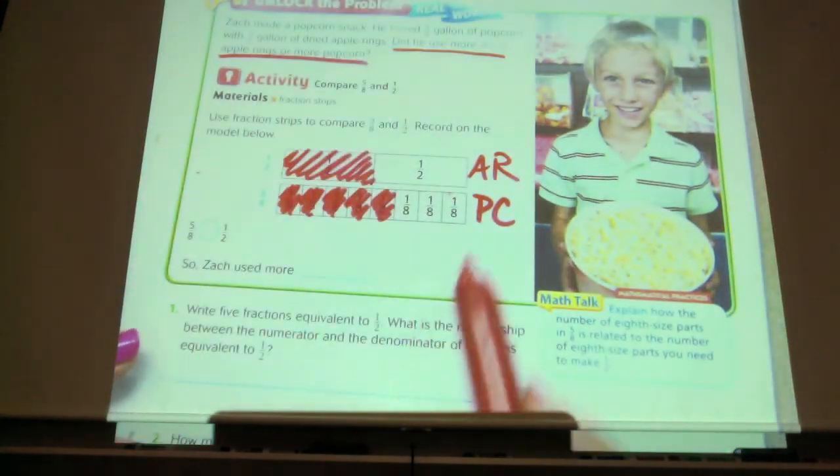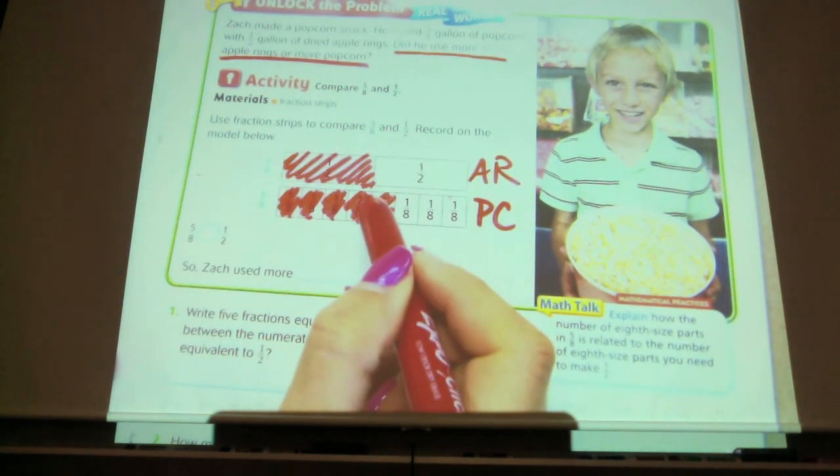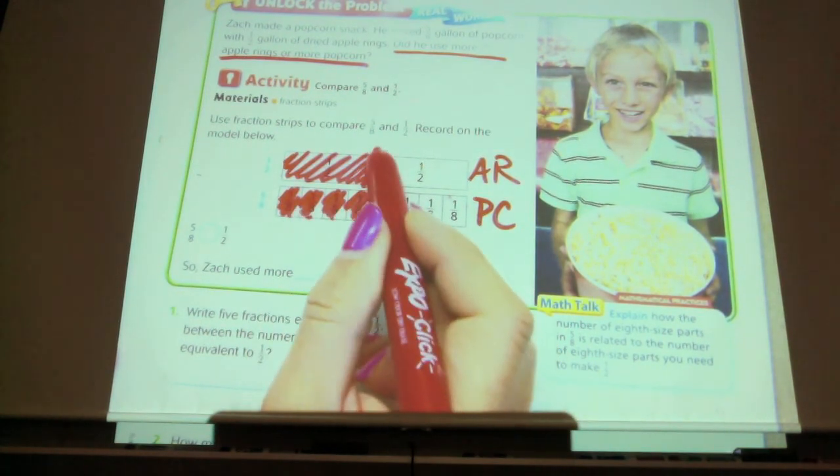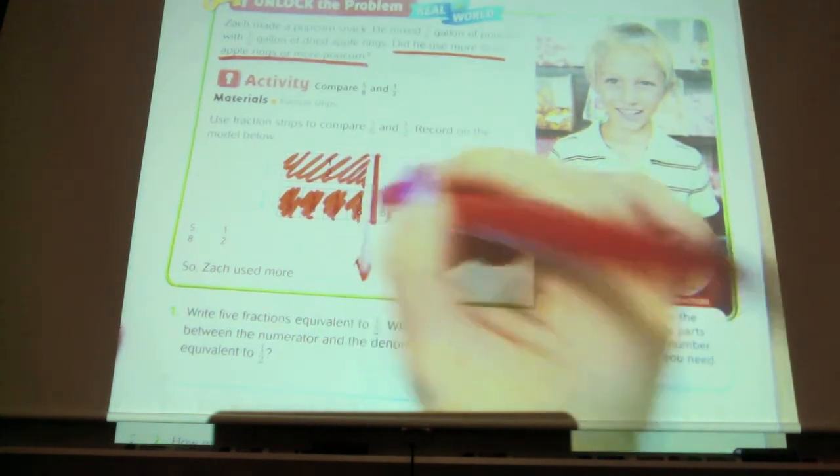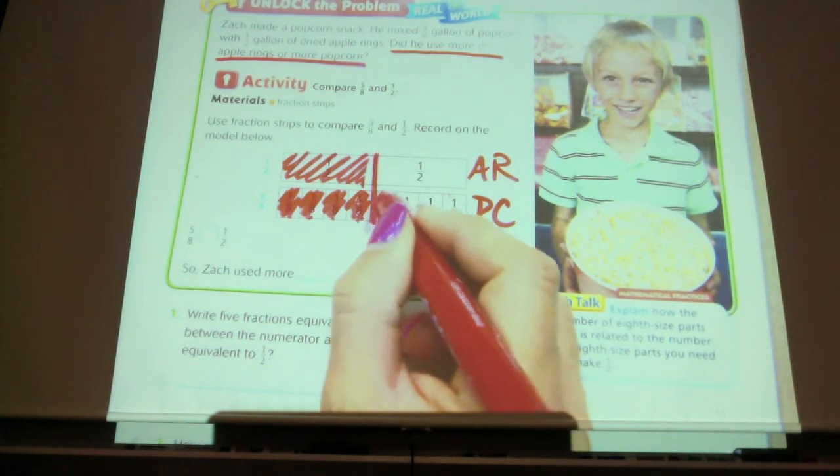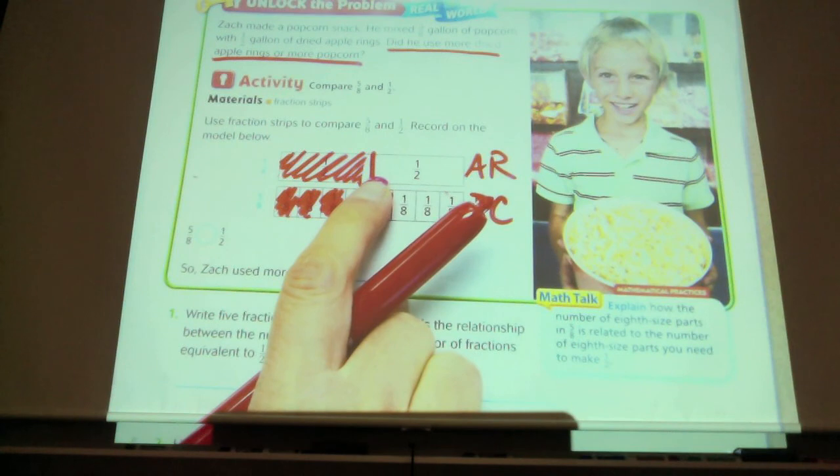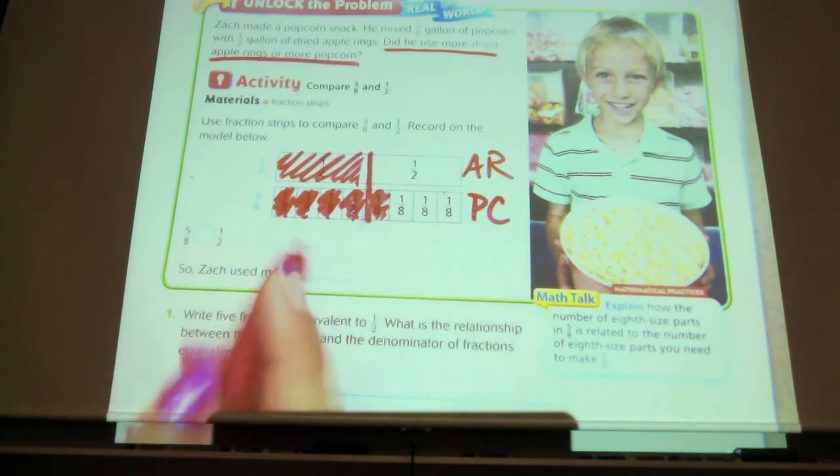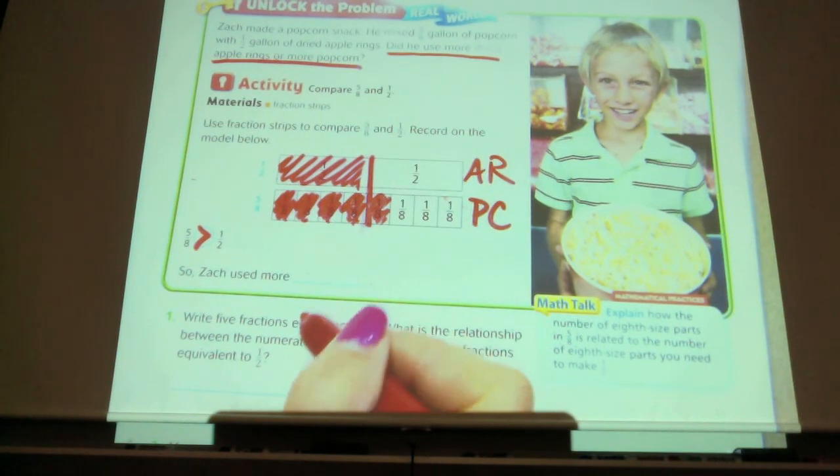So looking at this, they're set up equally. And when I set my bar model up, I did the half line here. So I can see that my halves are in the right spot. I split this bar in half just like I did the top bar. So looking at these, I can see that the five-eighths is more than a half. Can you guys see that? So five-eighths is greater than one-half. So he used more popcorn.